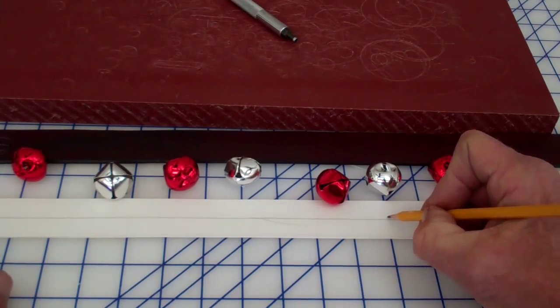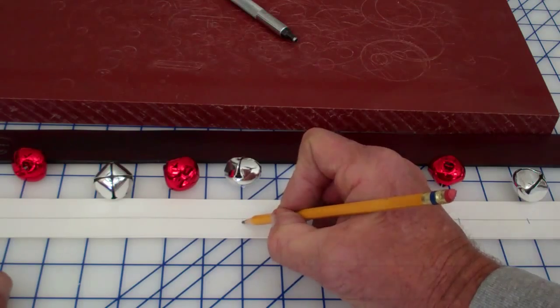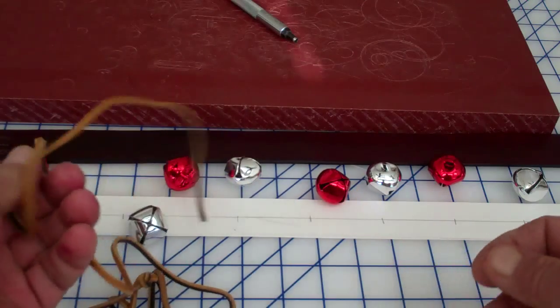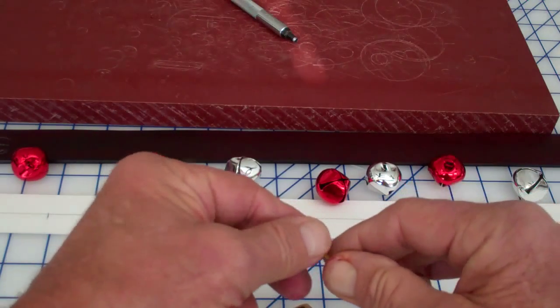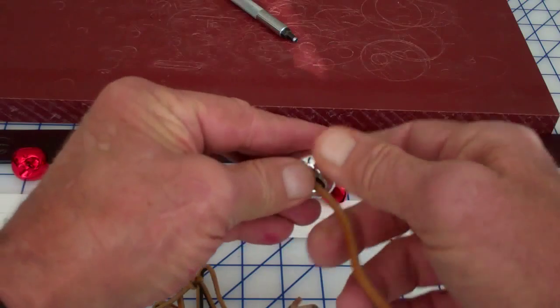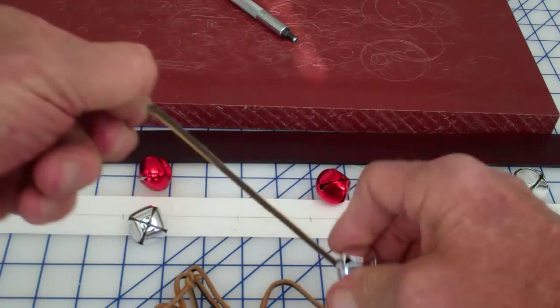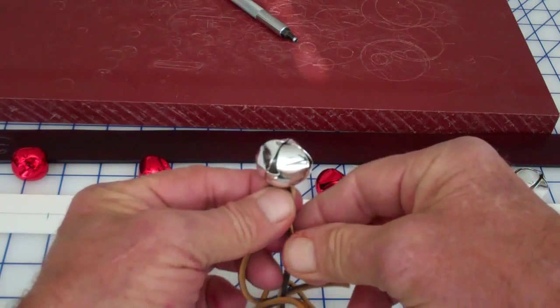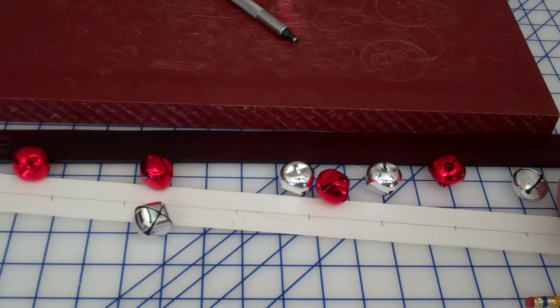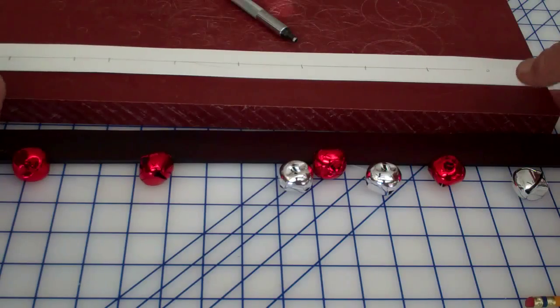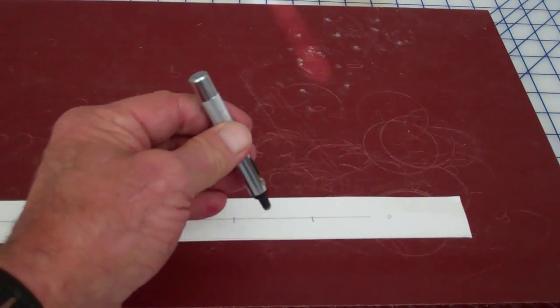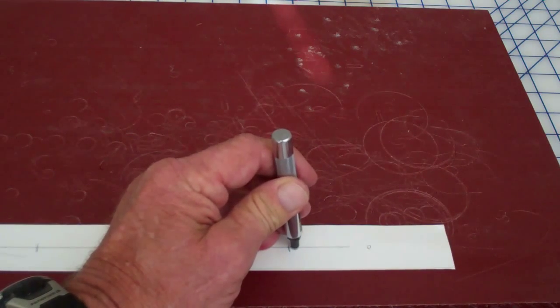We're going to punch holes. How we're going to use our shoestring lace leather lacing is I'm going to come up through the hole, through the bell, and back through the hole so you won't see the lace. So let's cut our holes into the template. What we're going to do is make a hole on each side of our mark so we come up and then go back down.